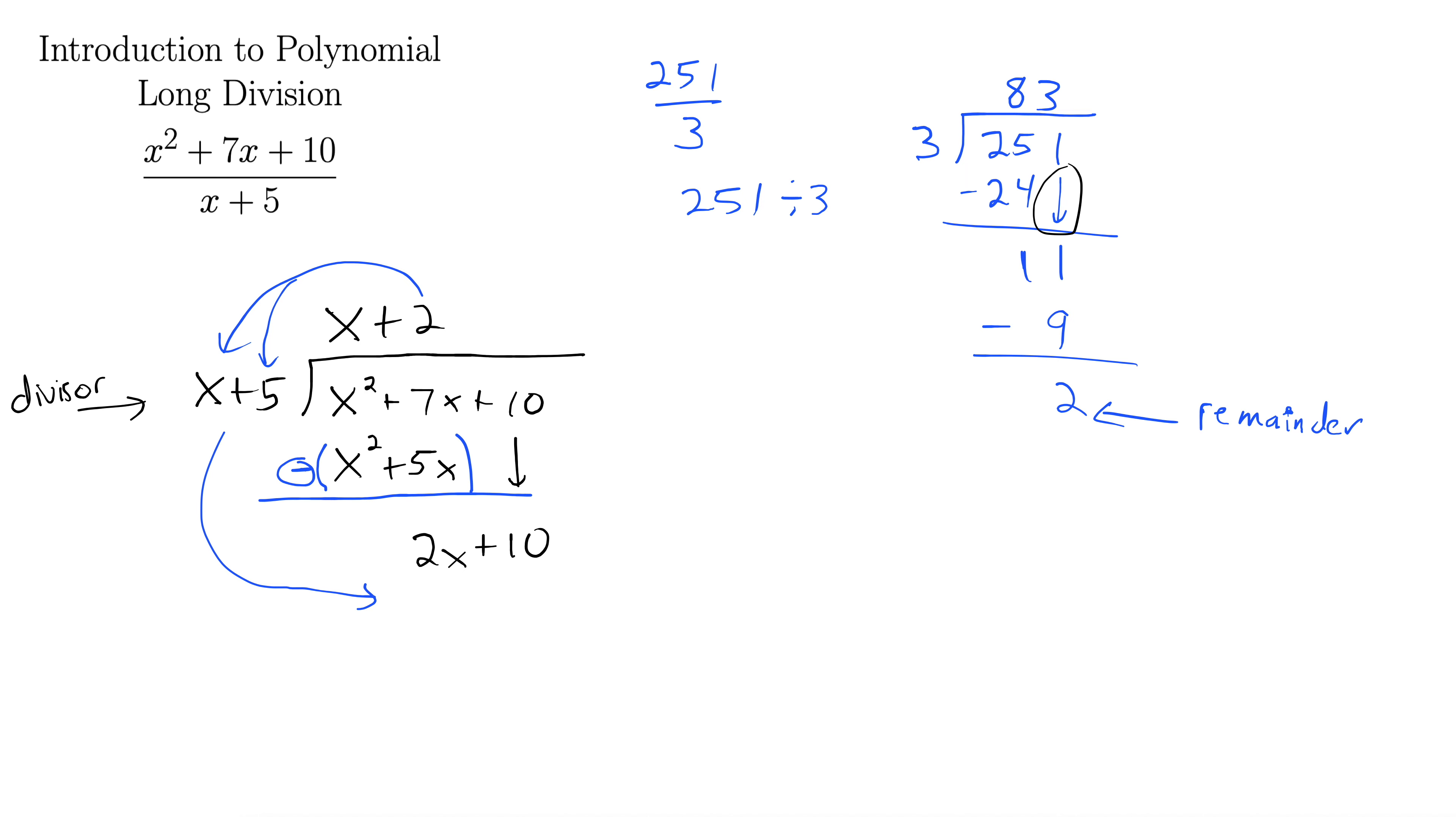So we have, we have 2 times x, 2x, 2 times 5 is plus 10. Then we subtract off. Every time we subtract here, 2x minus 2x is 0, 10 minus 10 is 0. So there is no remainder on that one.